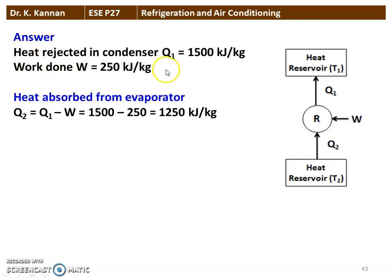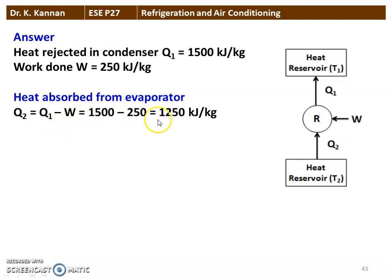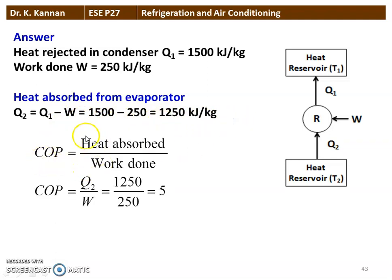For a refrigerator, heat rejected Q1 is 1500 kilojoules per kilogram. Work done is 250 kilojoules per kilogram. Heat absorbed by the evaporator Q2 equals Q1 minus W, so 1500 minus 250 equals 1250 kilojoules per kilogram. COP equals heat absorbed divided by work done, so COP equals 1250 divided by 250, equal to 5. So, 5 is the answer to the question.